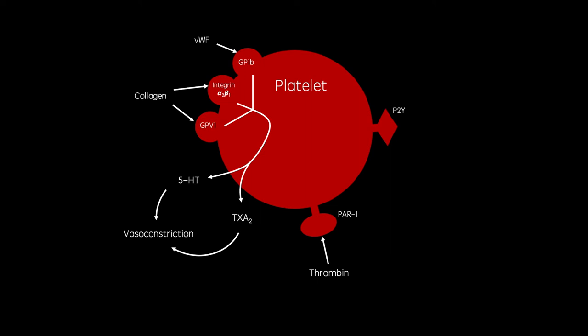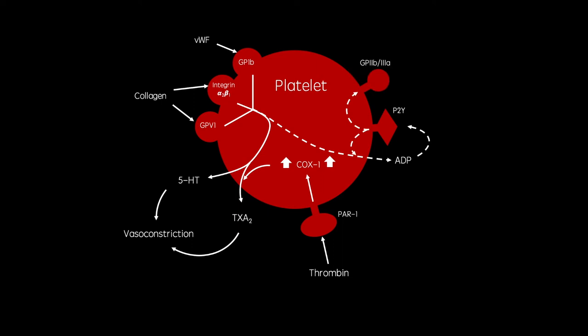Thrombin acts on the protease-activated receptors, or PARs, causing the release of intracellular calcium stores which activates cyclooxygenase-1, which subsequently generates further thromboxane A2. Platelet activation also induces the release of ADP from dense granules, which goes on to activate nearby platelets via P2Y receptors, stimulating the expression of GP2B3A receptors, or fibrinogen receptors. This allows fibrinogen molecules to connect to adjacent platelets, causing aggregation.